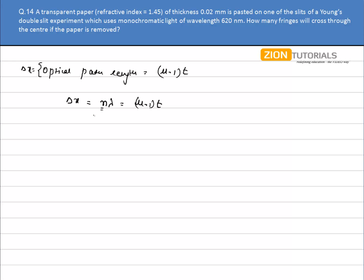I just have to calculate the value of n because that will tell me the order or number of fringes that will be crossed. The value of lambda is given as 620 nm. The value of (μ-1) times thickness is 0.02 × 10^-3. So the value of n comes out to be 14.5. That is my answer.